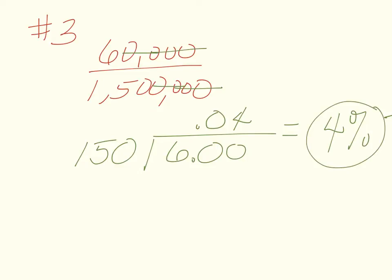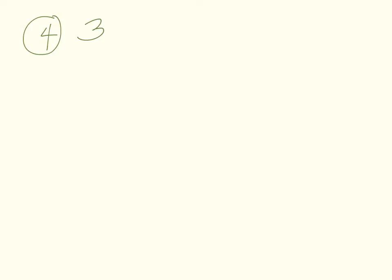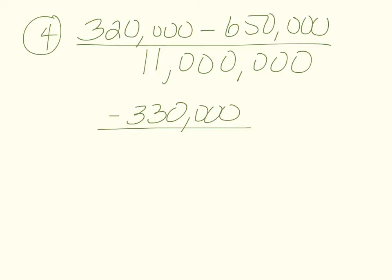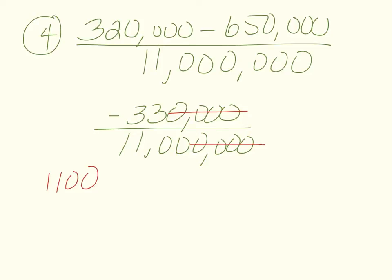Going on to number four: what is the growth rate for a country with a population of 11 million, with 320,000 births minus 650,000 deaths divided by 11 million? Subtracting first gives us negative 330,000 over 11 million. Getting rid of zeros — four here and four here — we have 1,100 going into 33, with a decimal.